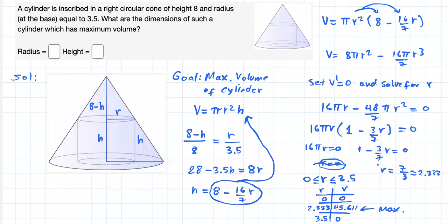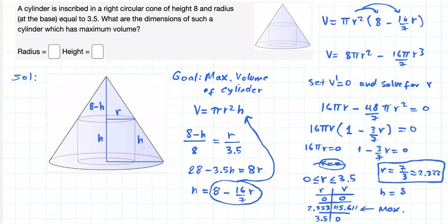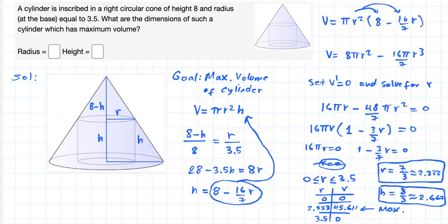Now, since we know the value of r, we can also find h, because h depends on r. Substituting this value into the h function gives us h equals 8 over 3 in exact form, and approximately 2.667 rounded to three decimal places. So these two values — r equals 7/3 and h equals 8/3 — will maximize the volume of this cylinder.